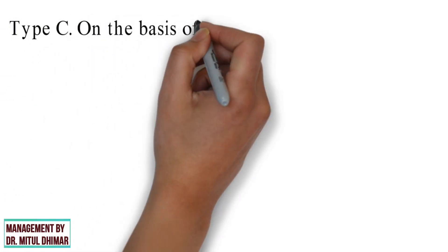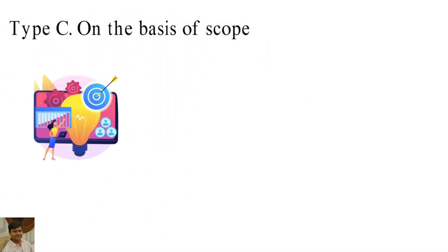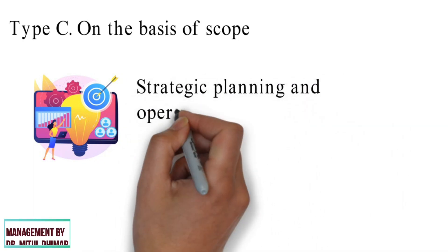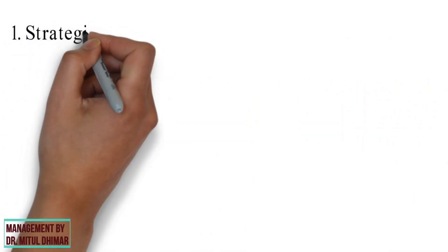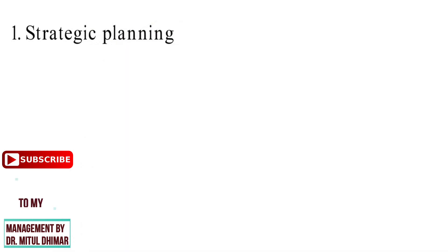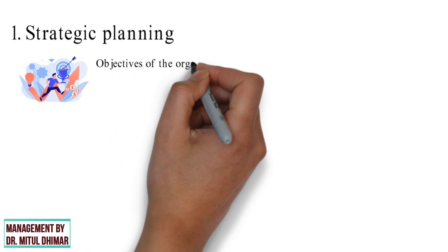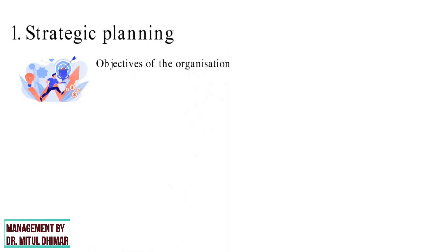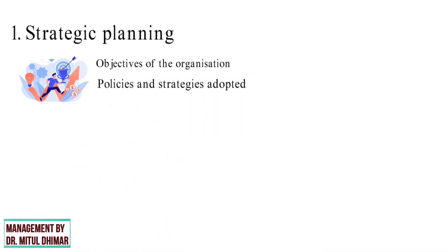Type 3: based on scope. Two types of planning can be distinguished based on scope: strategic planning and operational planning. Strategic planning is the process of determining the overall objectives of the organization and the policies and strategies adopted to achieve those objectives.